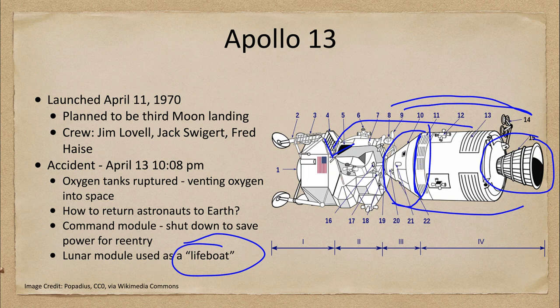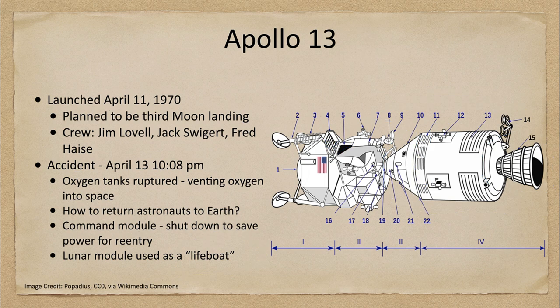At that point they moved back into the command module and had to power it back up in order to get the computers and everything running for landing. Once that separated, we were able to look back and see where the damage occurred, as we saw in that very first image. The astronauts were then safely returned to earth, having traveled around the moon but of course not able to land on it.